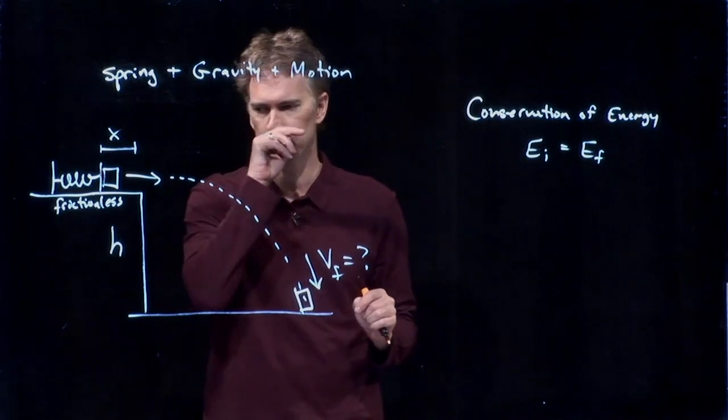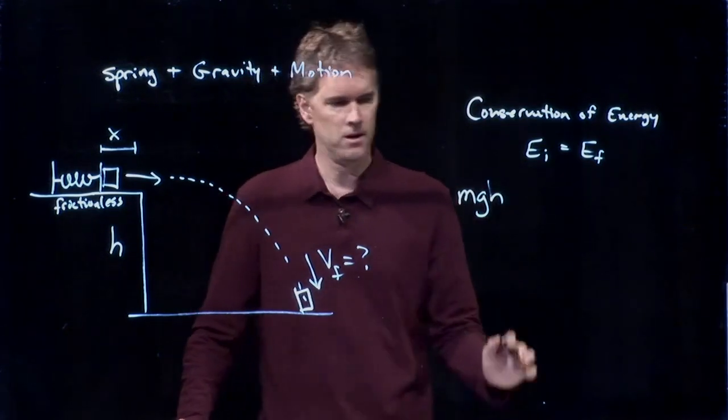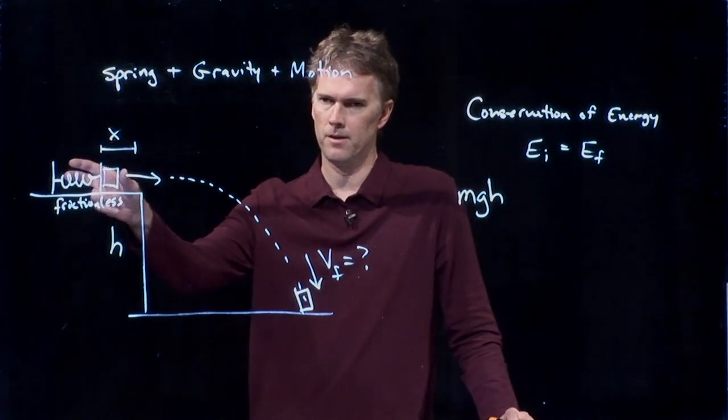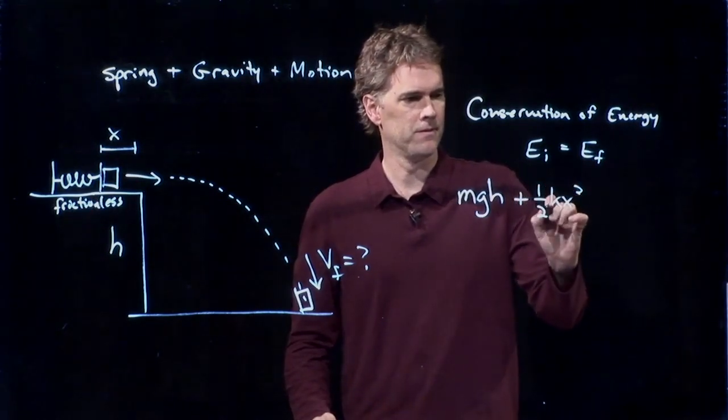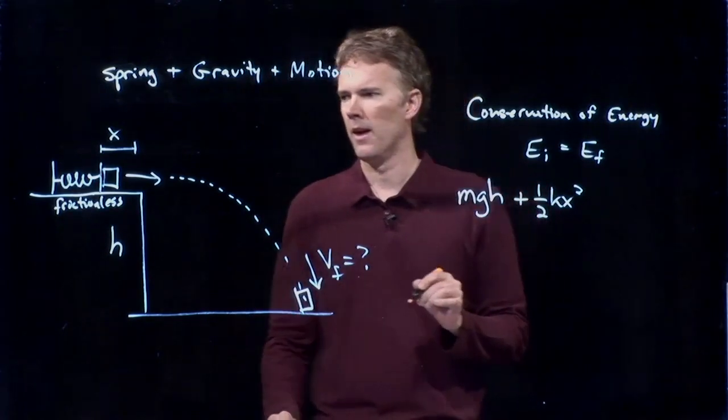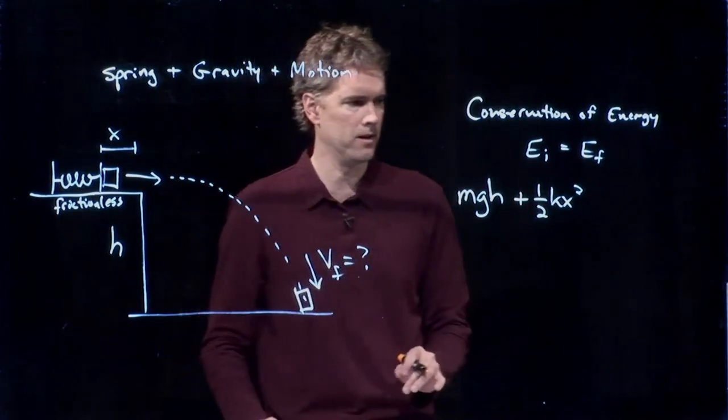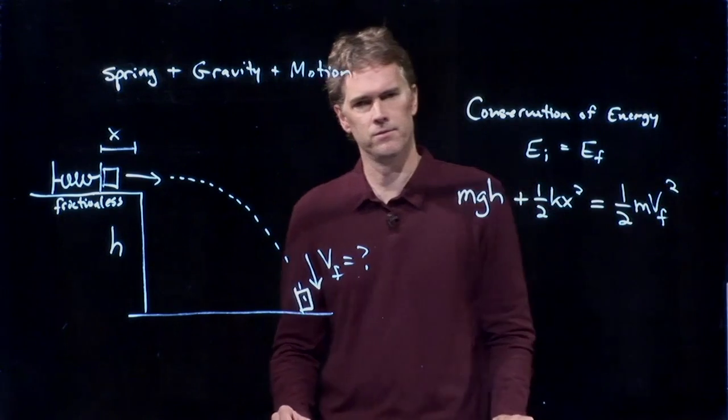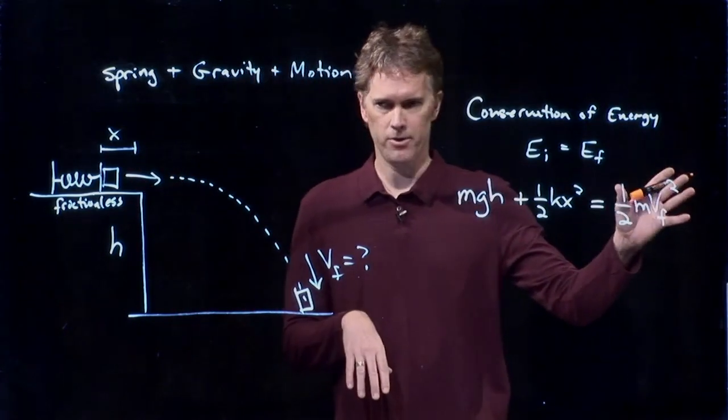So what sort of energy do we have initially? Well, Andrew said that we have potential energy. Absolutely. Is there any other energy that we have initially? Yes, because we've compressed the spring. And so we have to include that right here. And now we're going to launch it. So this is before launch. And now we launch it and it falls to the ground. This can be our final position here. Final position is all kinetic energy. It's down at height zero. Spring is gone. And so this is all we have on the right side of our equation.